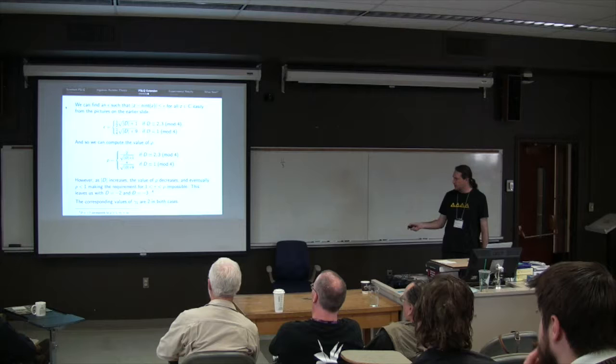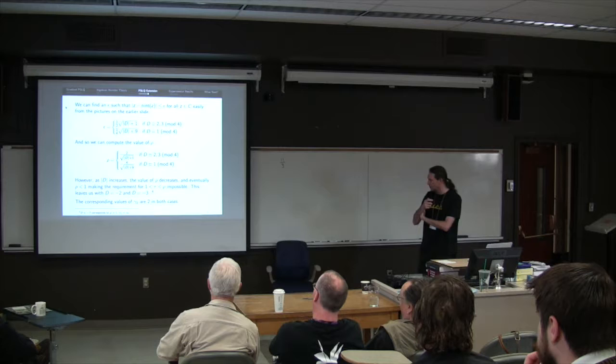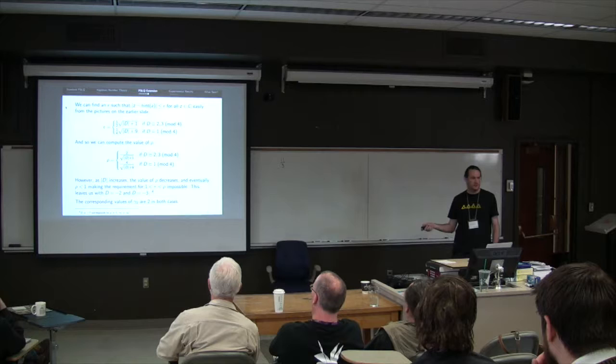So we're down to these. So I've gone from simple algebraic integers to Q adjoin root minus two and Q adjoin root minus three. This isn't necessarily bad. But the good news is that these two cases fit for free straight into the existing theory.